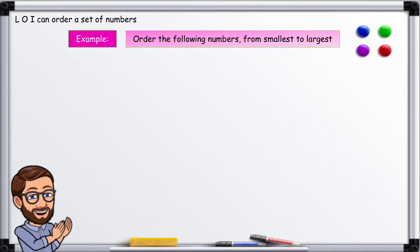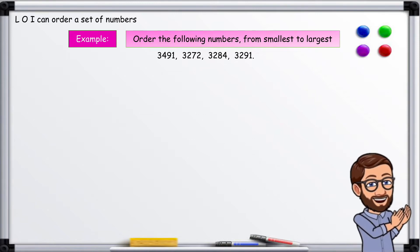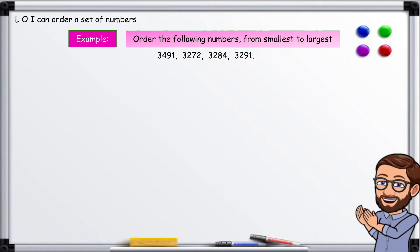Example. Order the following numbers from smallest to largest: 3491, 3272, 3284, 3291. Yuck. They look horrible but it's still dead easy if you follow the method.